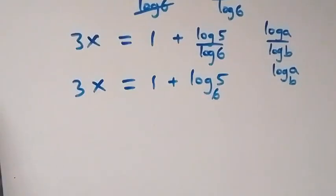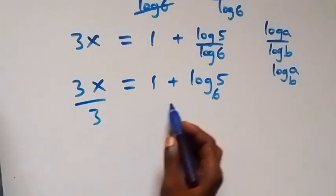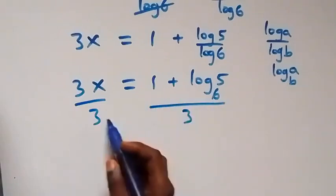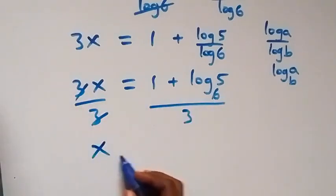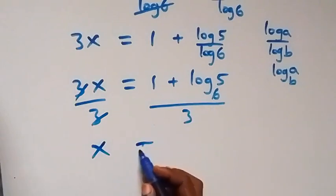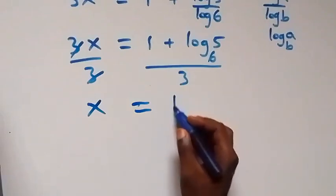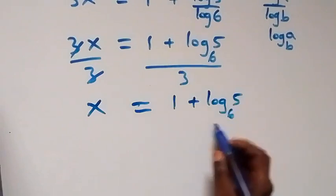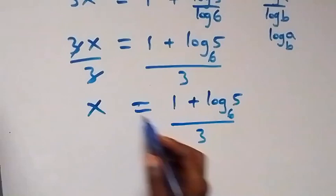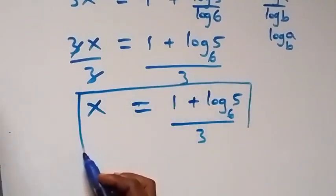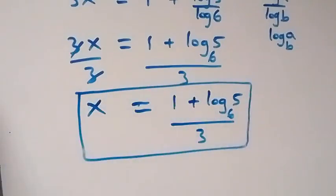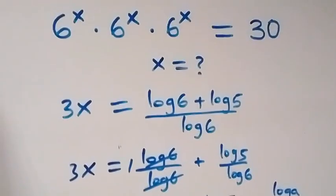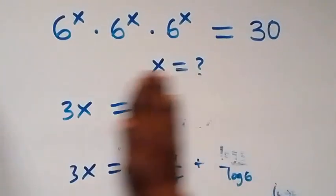Since we want to find x, we divide both sides by 3. The 3 cancels and we have x equals (1 plus log 5 to base 6) over 3. So the value of x in this given problem is x equals (1 plus log 5 to base 6) over 3.